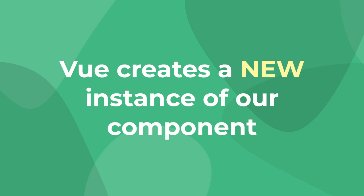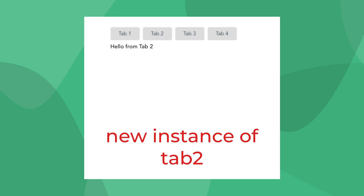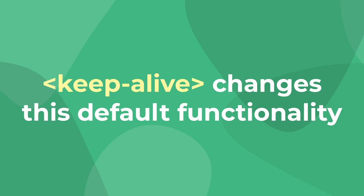By default, when we switch between dynamic components, Vue makes a brand new instance of that component every single time. So if we went to tab 1, it would create a new instance; tab 2, we would get a new instance of tab 2; and then if we go back to tab 1, we'll get a brand new instance of tab 1.